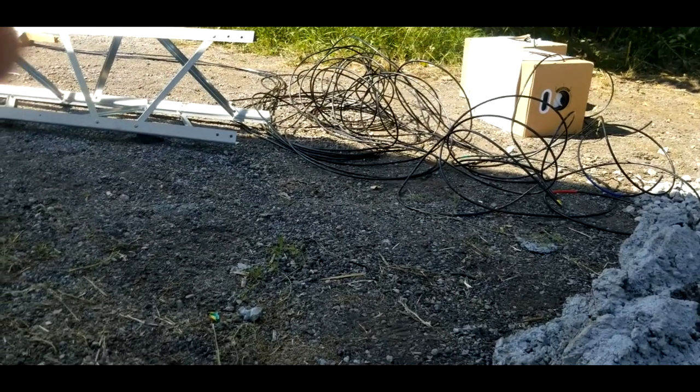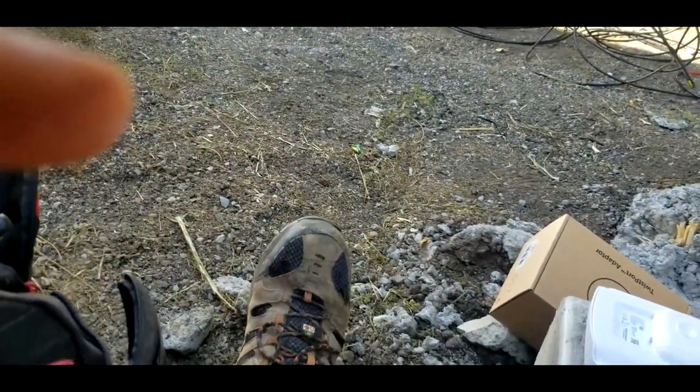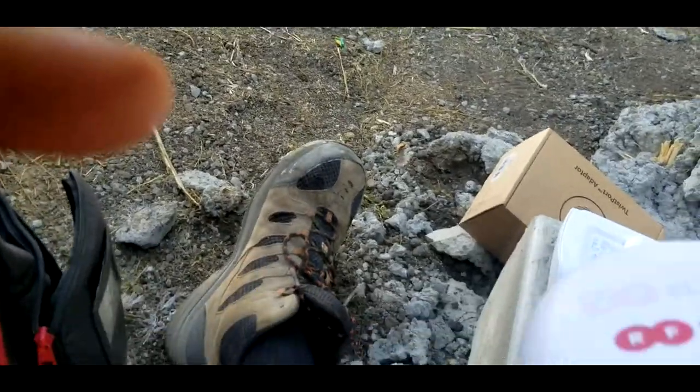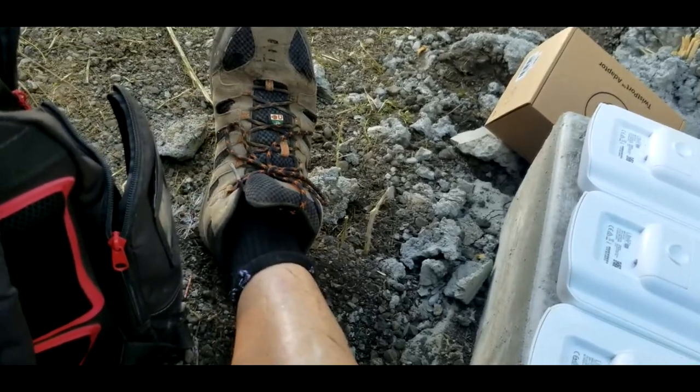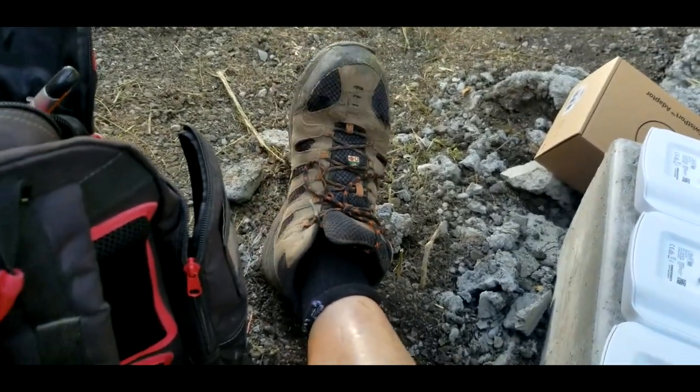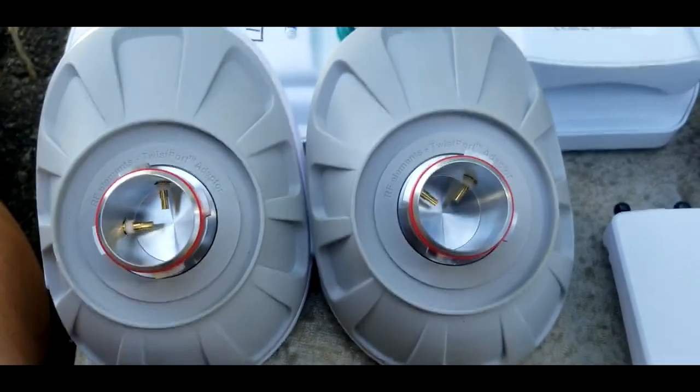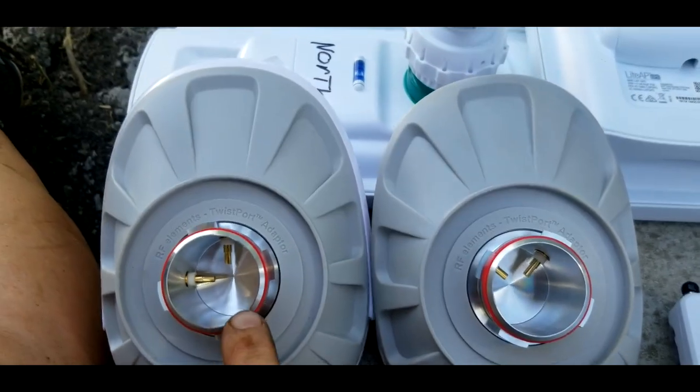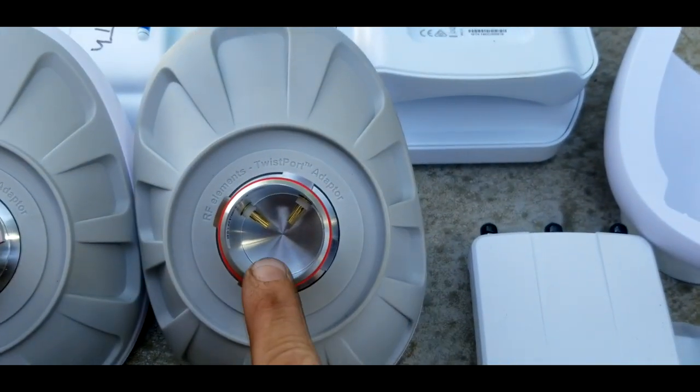See that one? So now I'm sure you guys know about the horizontal and vertical versus Slant 45 configurations here. We're going to show you how to do an RF elements twist port adapter for Slant 45. Now the only times I recommend this is with backhauls. That's horizontal and vertical.